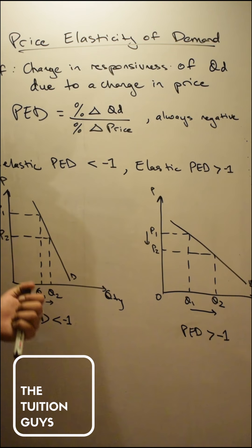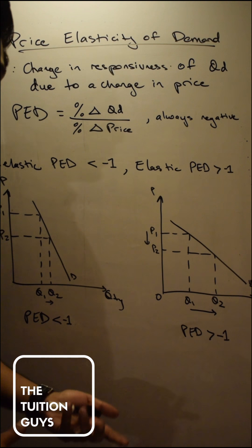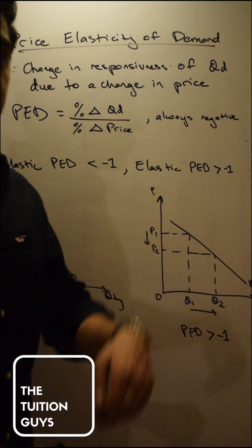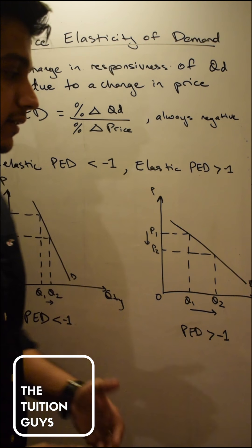All right, now coming on the opposite side, what is the inelastic PED? What is an inelastic price elasticity demand? That is when the percentage change in price is greater than the percentage change in quantity demanded. Due to a large drop in price my quantity demanded is just increasing marginally.